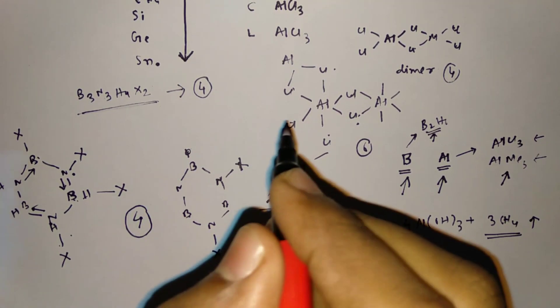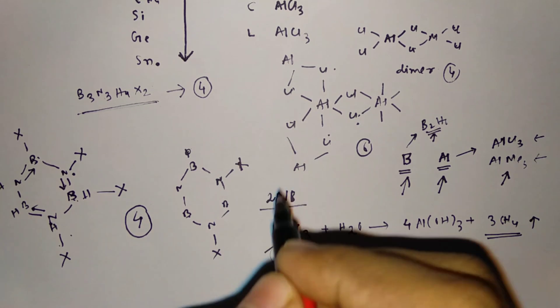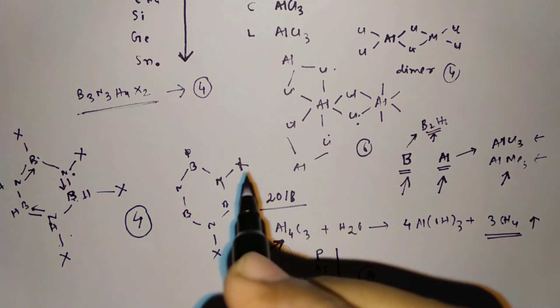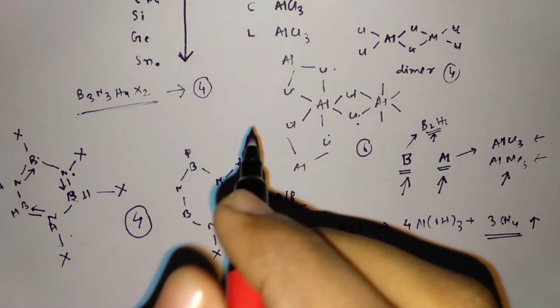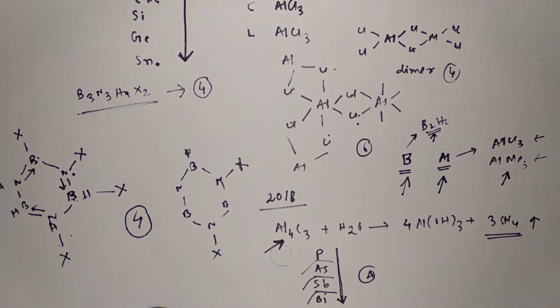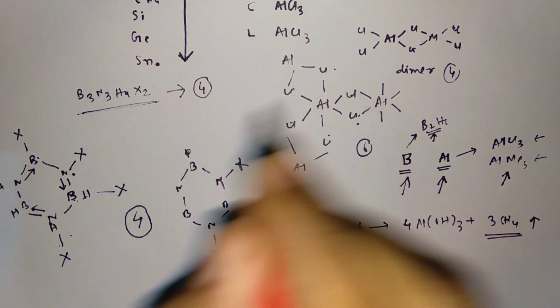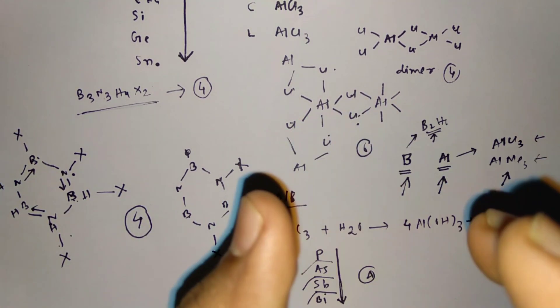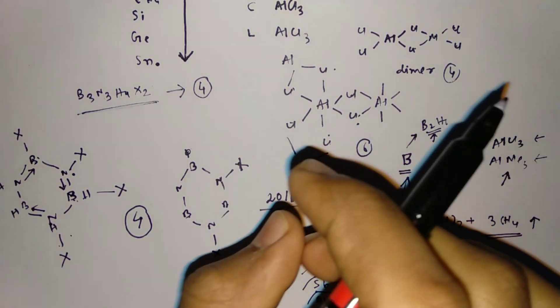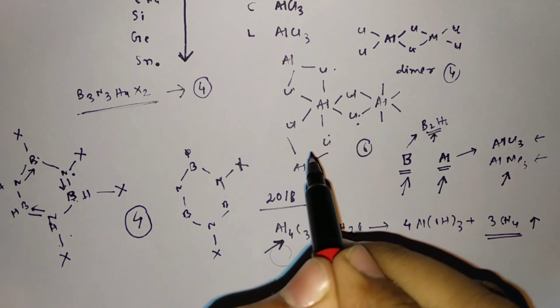Then, coming to allotropes of carbon, which is important — diamond and graphite structure from the S and P block elements chapter. Then fullerenes, silicones, and different kinds of silicates — you have to remember different kinds of silicates.